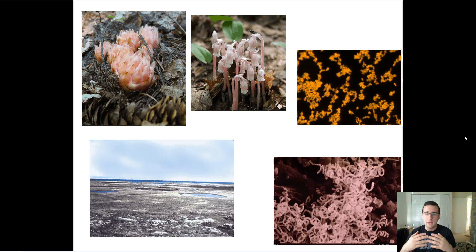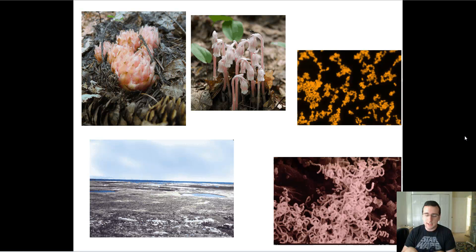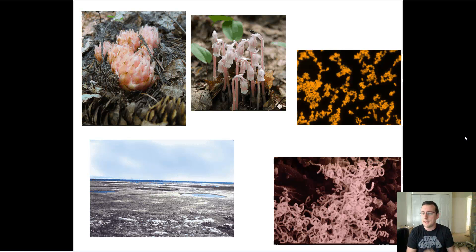Mycotrophs are types of plants that act as parasites, basically feeding off the chemicals produced by fungus. Mycotrophs don't really kill the fungus — they live in symbiotic relationships with it. An example is some types of orchid families, like the one you see on the top left. They live and feed off the fungus, getting some of the chemicals they need in order to produce their energy.